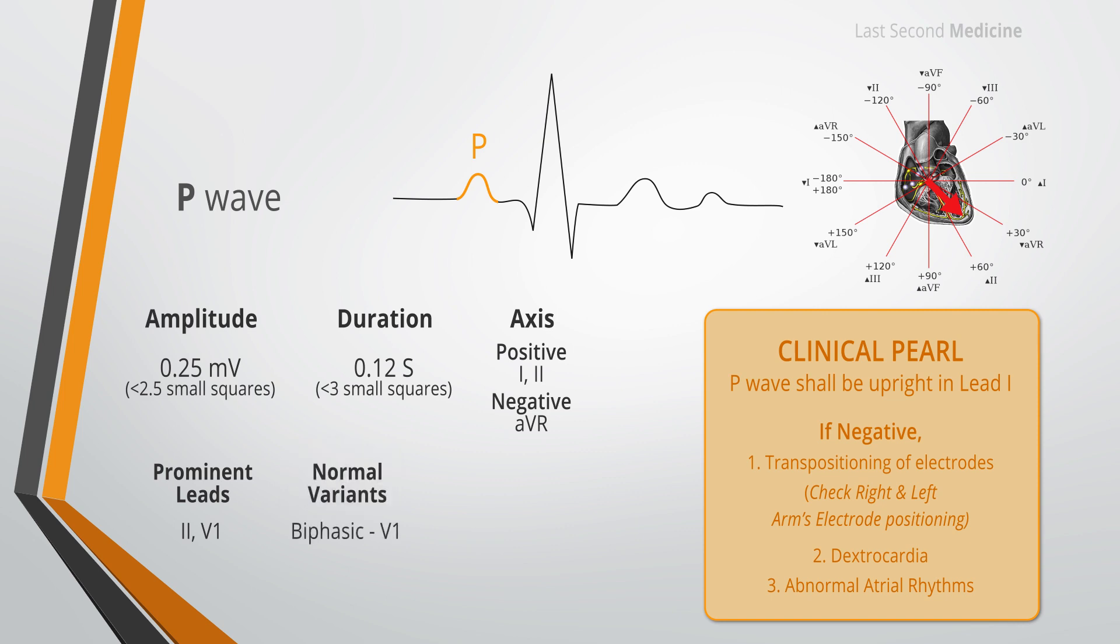The P wave in V1 is often biphasic. Early right atrial forces are directed anteriorly giving rise to an initial positive deflection. These are followed by left atrial forces traveling posteriorly producing a later negative deflection. A large negative deflection area of more than 1 small square suggests left atrial enlargement.